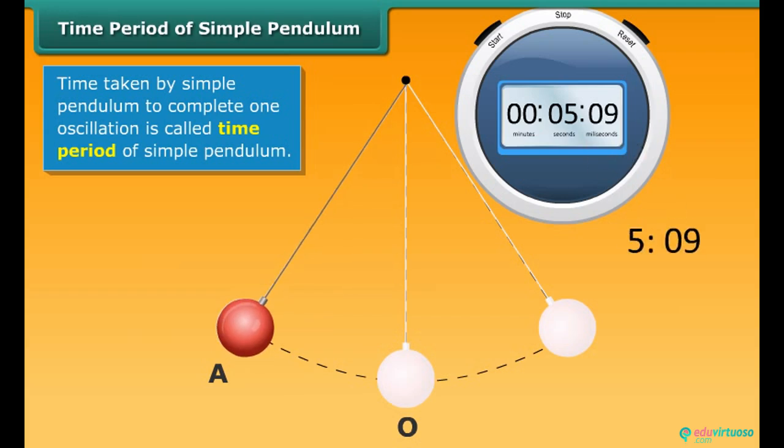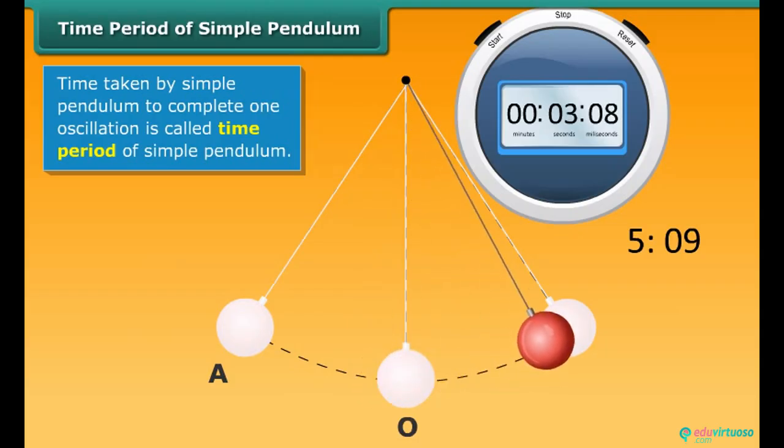Start a stopwatch and release the bob at the same time. When the bob comes back to the extreme position A, note the time on the stopwatch. Repeat the activity. This time, start from the equilibrium position O.